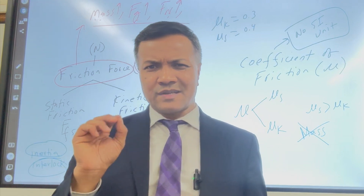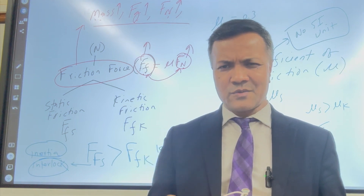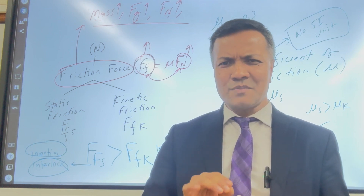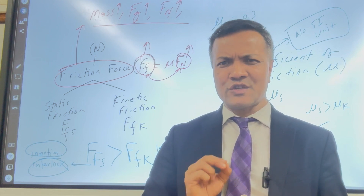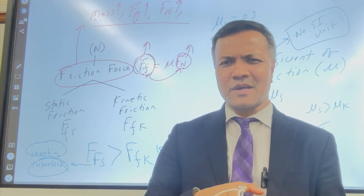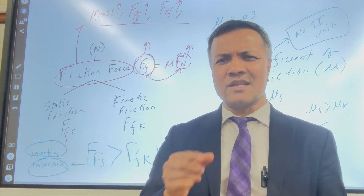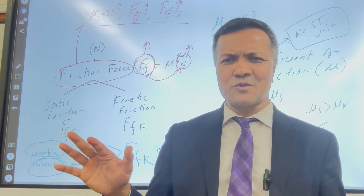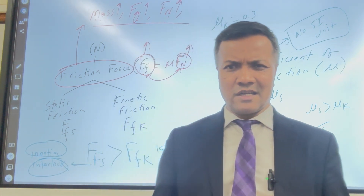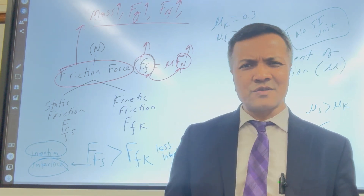That's the first reason. The second reason is inertia. Inertia means an object at rest resists changing its behavior — it wants to stay at rest. So to change that, you must apply force, and the object effectively pushes back in the opposite direction to cancel the applied force. Once you overcome inertia, the object moves. And an object in motion wants to stay in motion — it resists stopping. So inertia and interlock together explain why static friction is greater than kinetic friction.